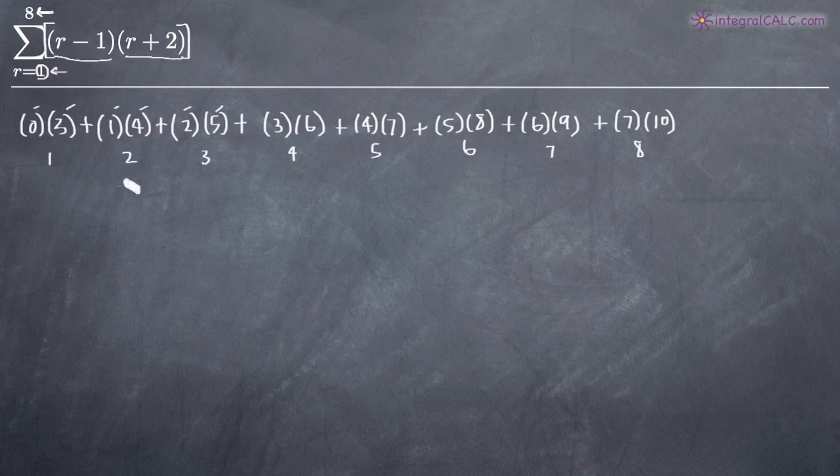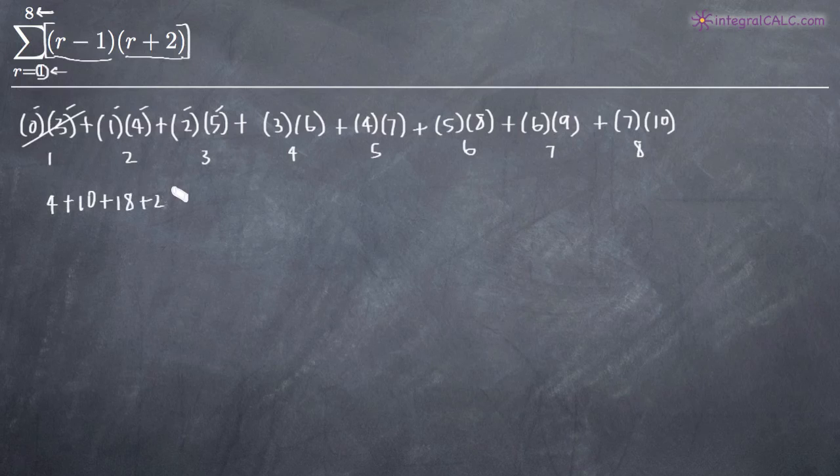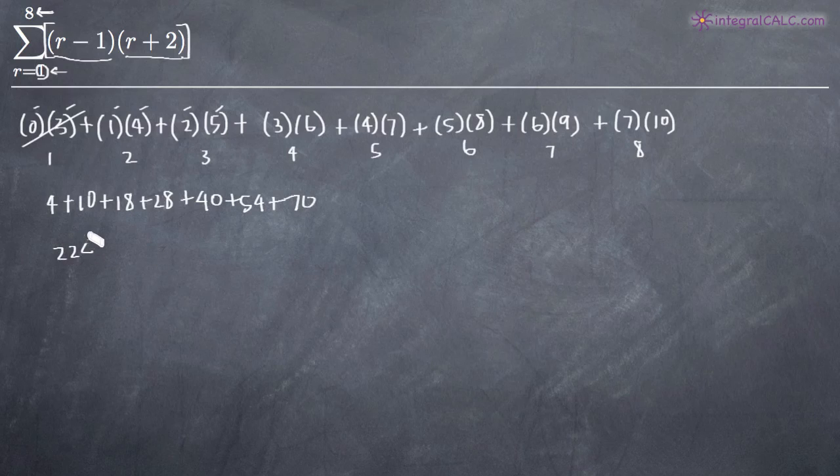So now we just have to do the arithmetic here. We're going to get zero, this is going to cancel. Then we'll get four plus ten plus eighteen plus twenty-eight plus forty plus fifty-four plus seventy. And when we add those together, we'll get 14, 24, 32, 52, 60, 100, 154, 224 is what we get when we add those all together.